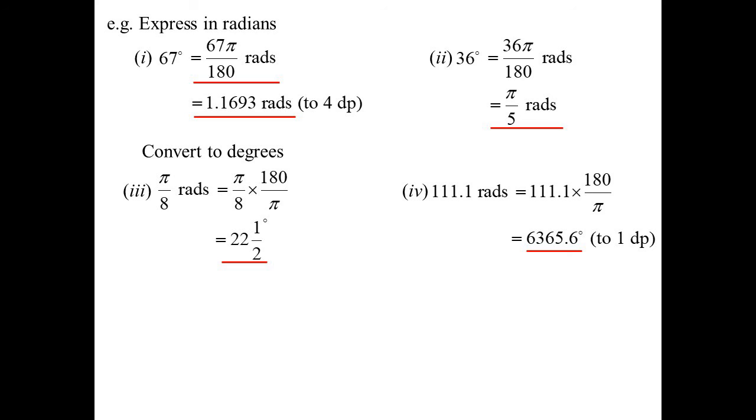Because a radian is quite large when you think about it. Because if one radian would be 180 divided by pi, pi is around about 3.14, etc. So when you think about it, a radian is actually quite large.